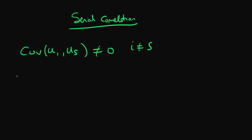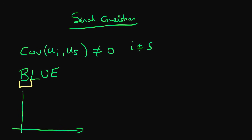It was one of the Gauss-Markov assumptions, in fact. What is the problem this causes if it is present in our population or in our model? It actually means that least squared estimators are no longer best. There are other linear unbiased estimators which have a lower sampling variance.